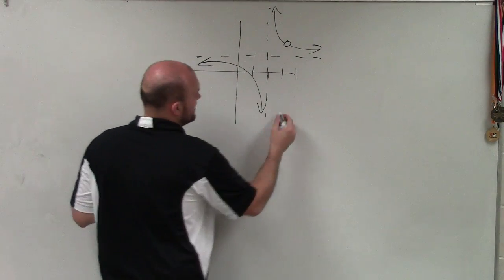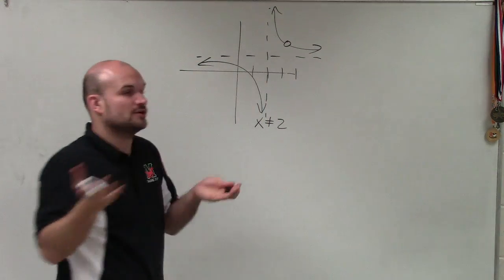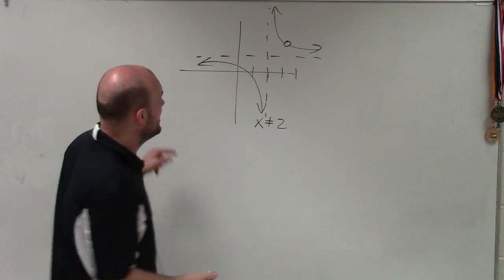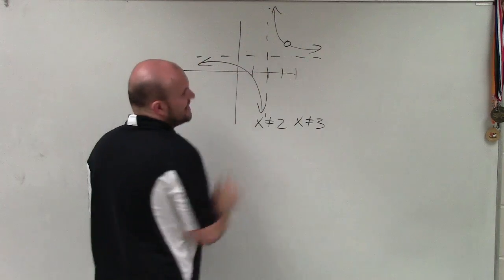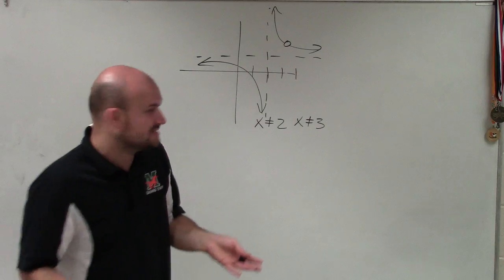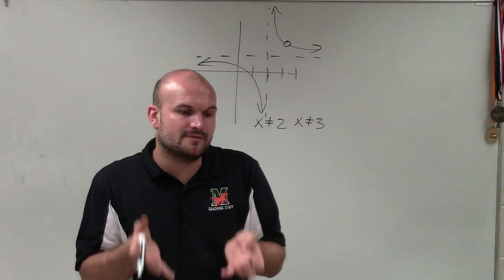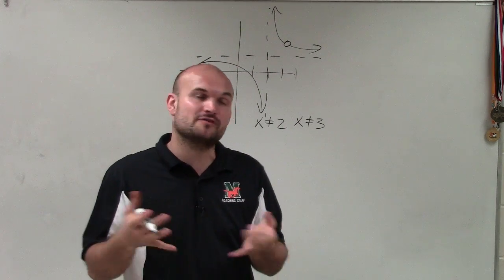So here you can say that X cannot equal 2 at this value is an asymptote, and this is where the graph is going to approach. I have other videos on what exactly asymptotes are, and then you can also see that X cannot equal 3 because that's a hole. There's a difference between holes and asymptotes, but their similarities are that both of them, your values, they're not solutions of your equation.